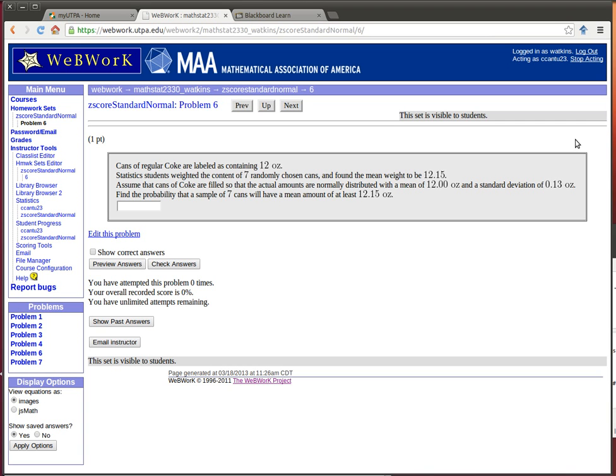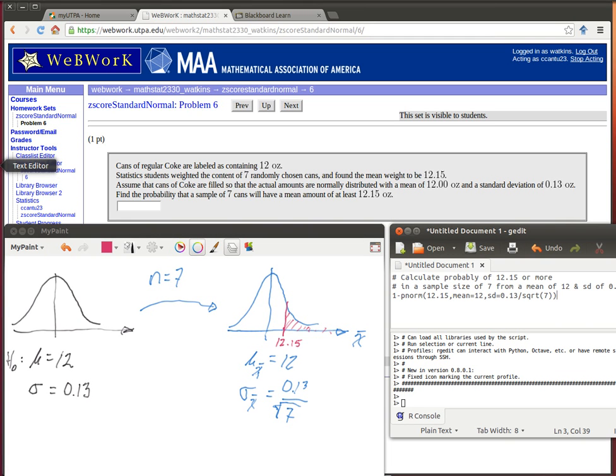In this video we're going to look at the Coke can problem from the z-score standard normal problem set. Let's pull up a couple things here real quickly. I've already started doing the calculations. Here's the situation.